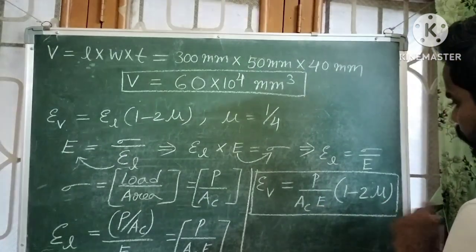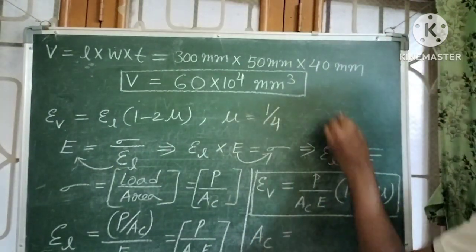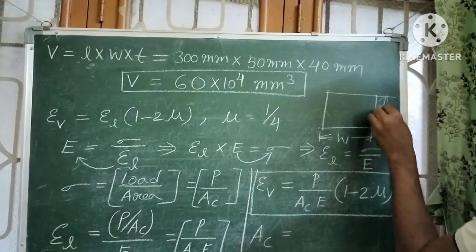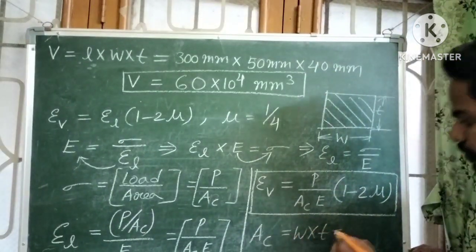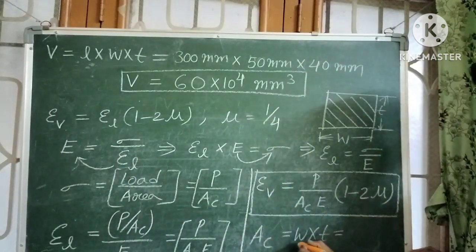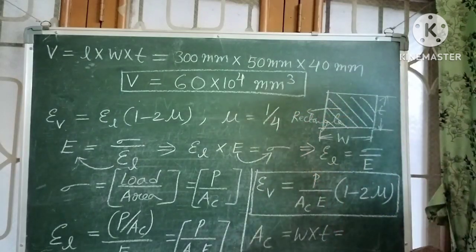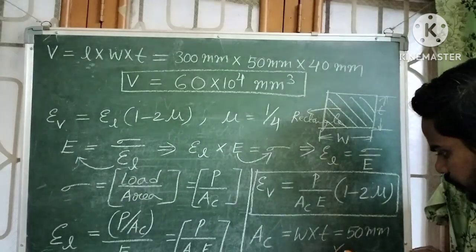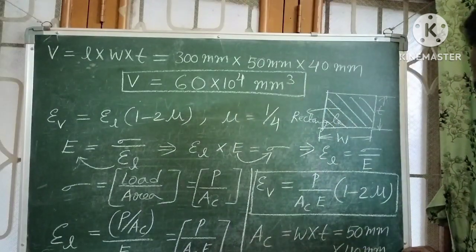We need to find the cross-sectional area. Since it is a rectangular bar, the cross-section is rectangular with dimensions width and thickness. Width = 50 mm and thickness = 40 mm. So cross-sectional area AC = width × thickness = 50 mm × 40 mm = 2000 mm².